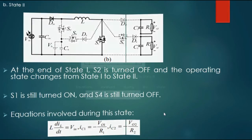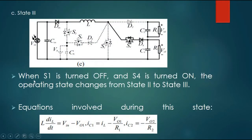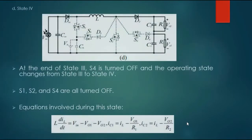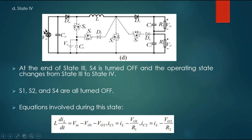State 3: When S1 is turned off and S4 is turned on, the operating state changes from State 2 to State 3. Equations are involved during this state. State 4: At the end of State 3, S4 is turned off and the operating state changes from State 3 to State 4. S1, S2, and S4 are all turned off. Equations are involved during this state.